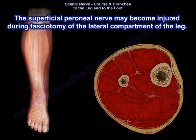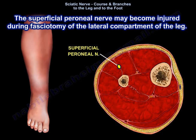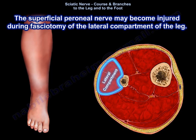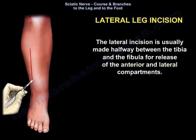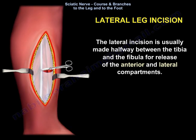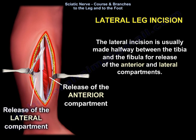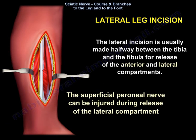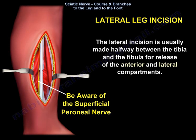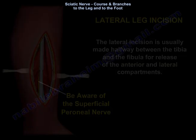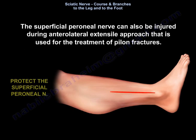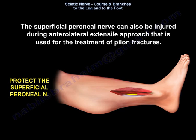The superficial perineal nerve may become injured during fasciotomy of the lateral compartment of the leg. The lateral incision is usually made halfway between the tibia and the fibula for release of the anterior and lateral compartments. Be aware that there is a nerve there that will be injured during release of this compartment — try to see that nerve and try to avoid it. This nerve can also be injured during a lateral extensile approach used for treatment of pilon fractures.